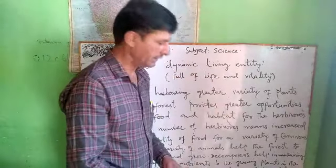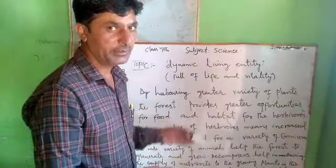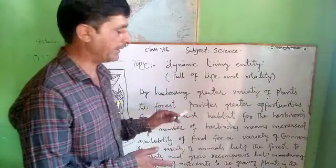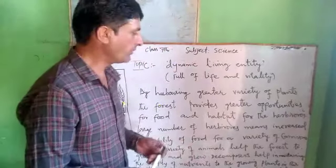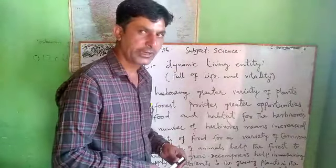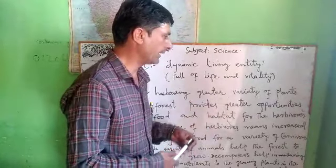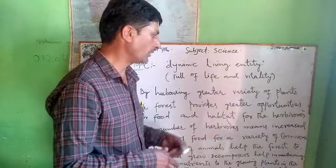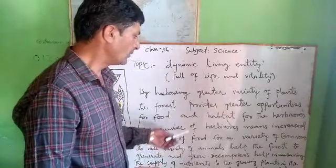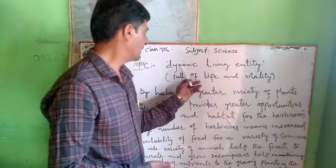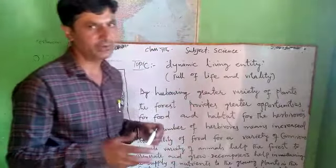Therefore the forest is a Dynamic Living Entity. We say that this one is a dynamic living entity. In the animal fields, they provide food for the carnivores, and the carnivores are also part of this system. So this is the Dynamic Living Entity — means full of life and fertility.